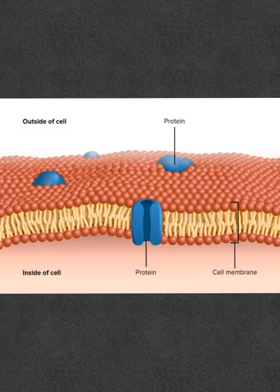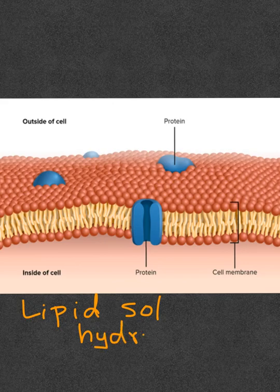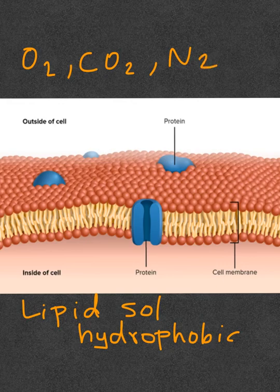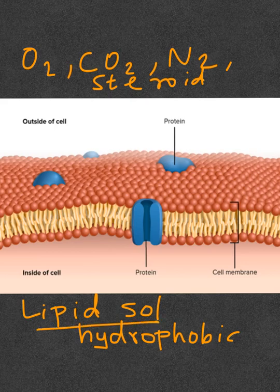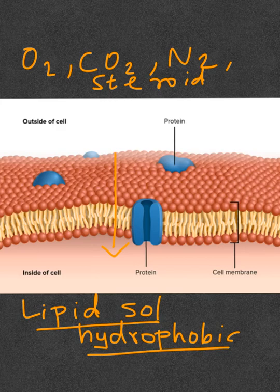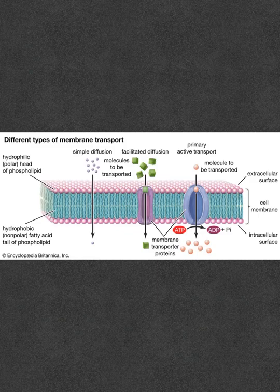For this reason, lipid-soluble or hydrophobic molecules such as oxygen, carbon dioxide, nitrogen, and some steroid hormones can easily cross the cell membrane. The cell membranes are selectively permeable in the sense that they allow lipid-soluble or hydrophobic substances to easily cross by simple diffusion.